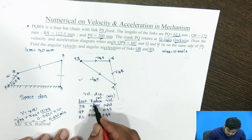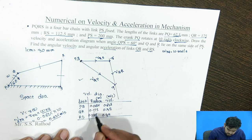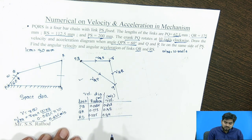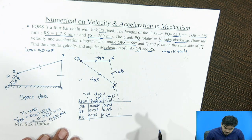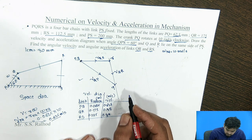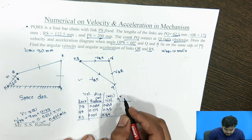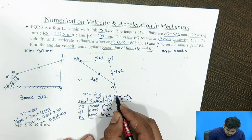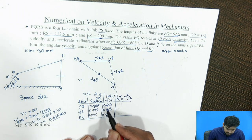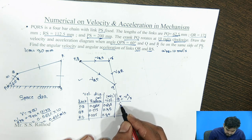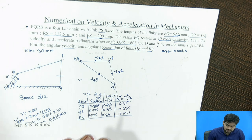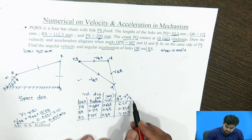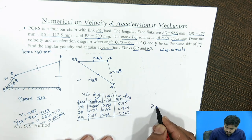Now we find the acceleration diagram. For drawing the acceleration diagram, there are two components: the radial component and the tangential component. The radial component for each link is V²/R. Using the known velocities and radii, we calculate: radial component of PQ = 6.25, QR = 0.825, RS = 1.027. These are the radial components calculated for each link.